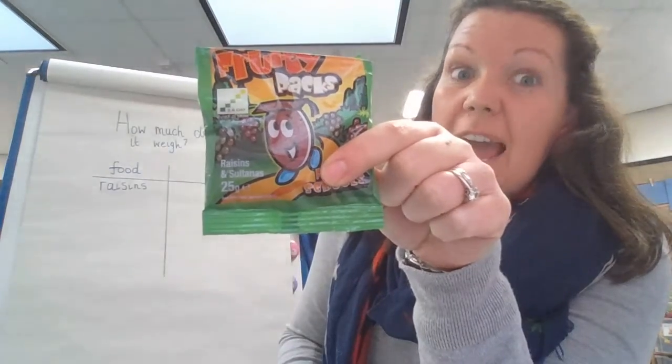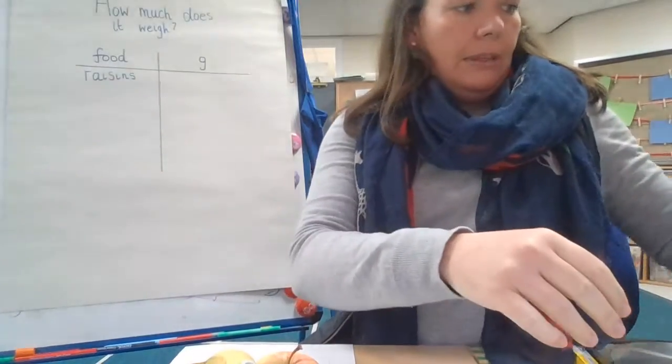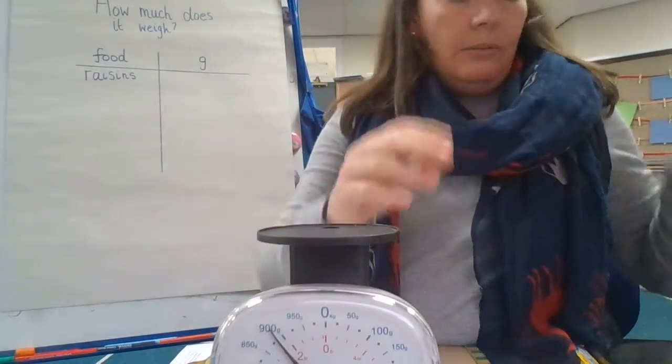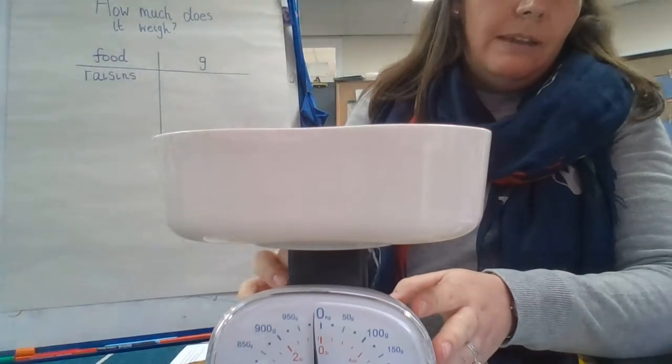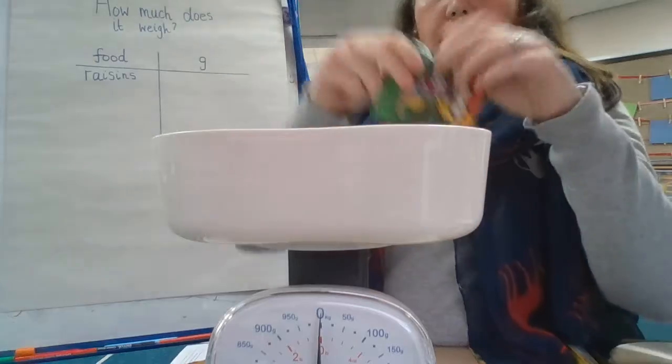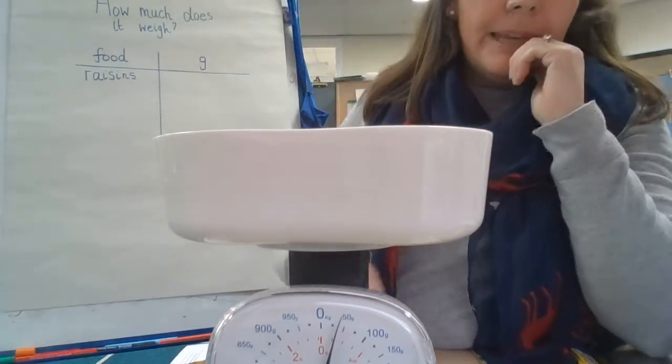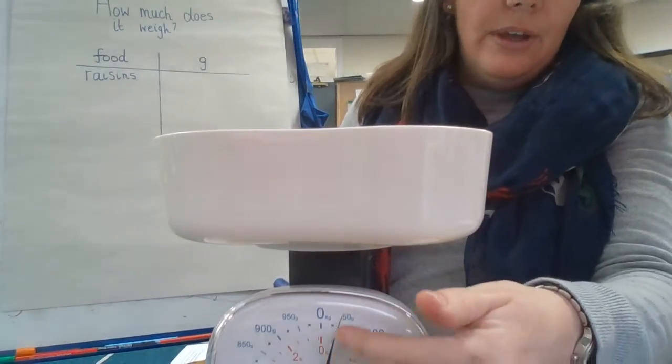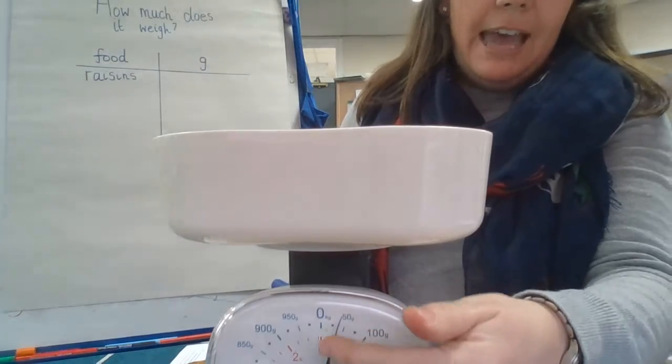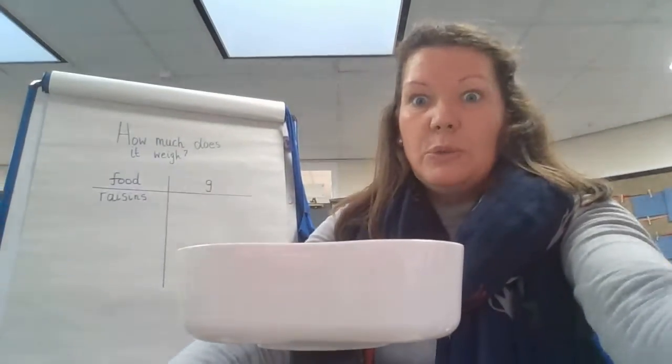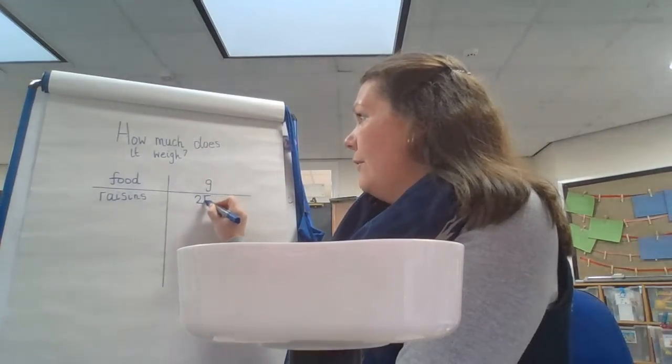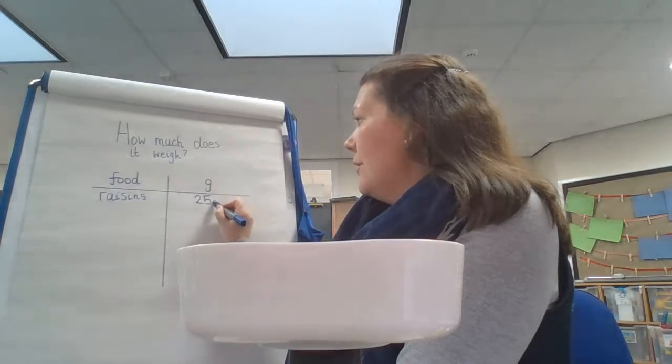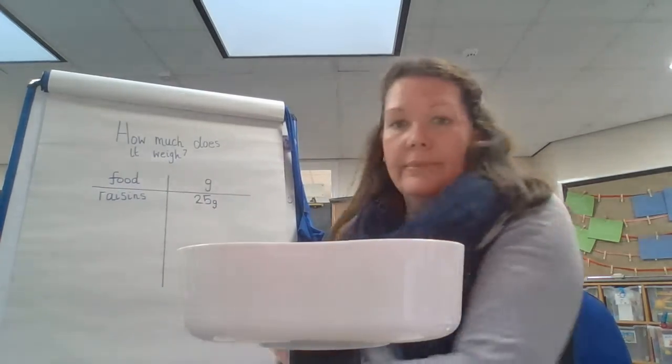I've got my balancing scales ready. Let me put these back here so you can see. I'm going to make sure my pin is on zero, so I'm just going to adjust it at the back, and I'm going to pop my raisins in. Now, can you see that it went straight to in between 50? That must mean half of 50 is 25. So next to there, I'm going to write 25 grams. Fantastic.